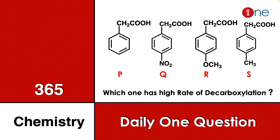Welcome to One Chemistry. This is the 365 Chemistry Series — daily one question for you. Here, four different acids are given. P is benzoic carboxylic acid, Q has a nitro substitution, R is methoxy, and S is methyl.